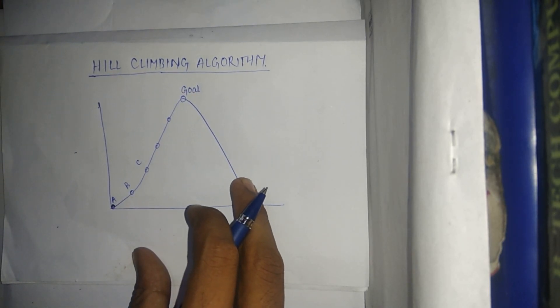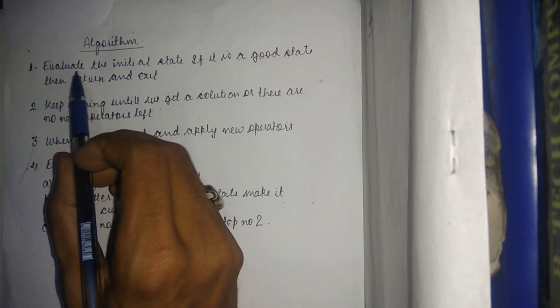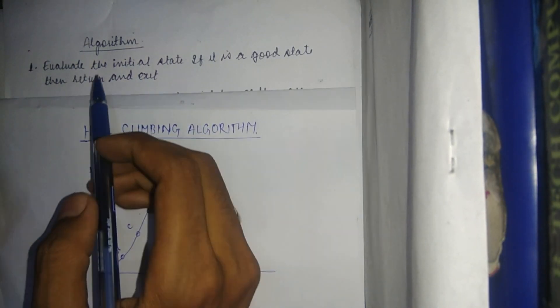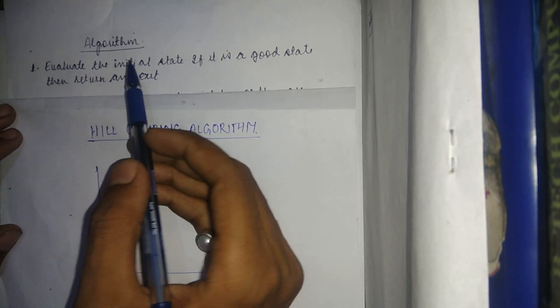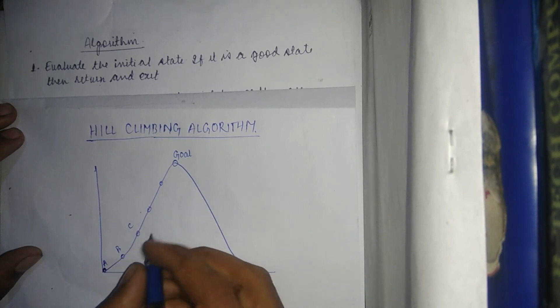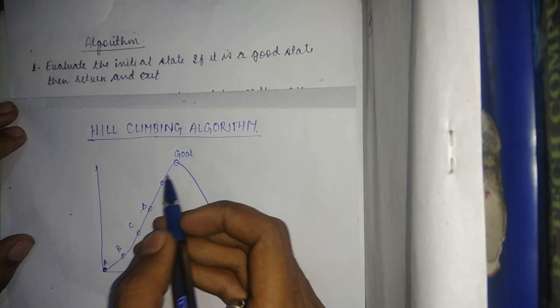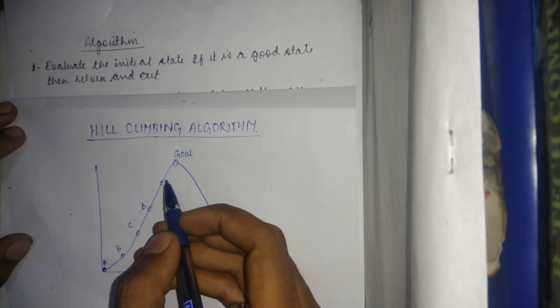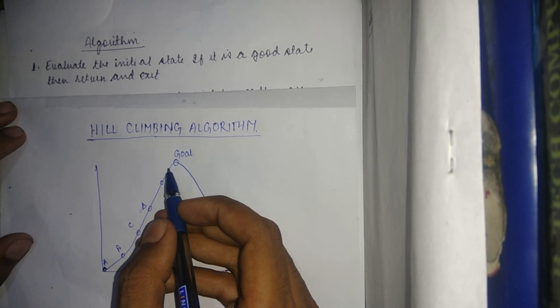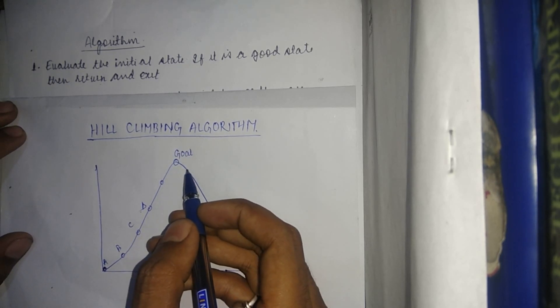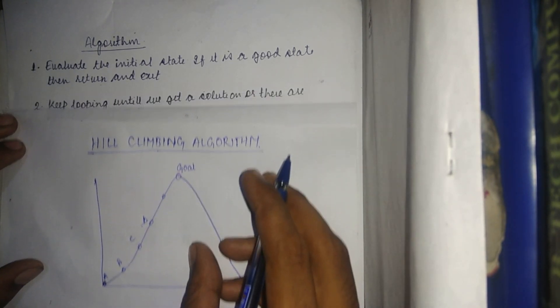Let us consider the algorithm for hill climbing. The first step is to evaluate the initial state. If it is a good state or the goal state, return and exit. Suppose we are at position D — we check if it matches the goal state. If true, we exit, having reached the goal state with no further calculations needed. If not, we go to step two.